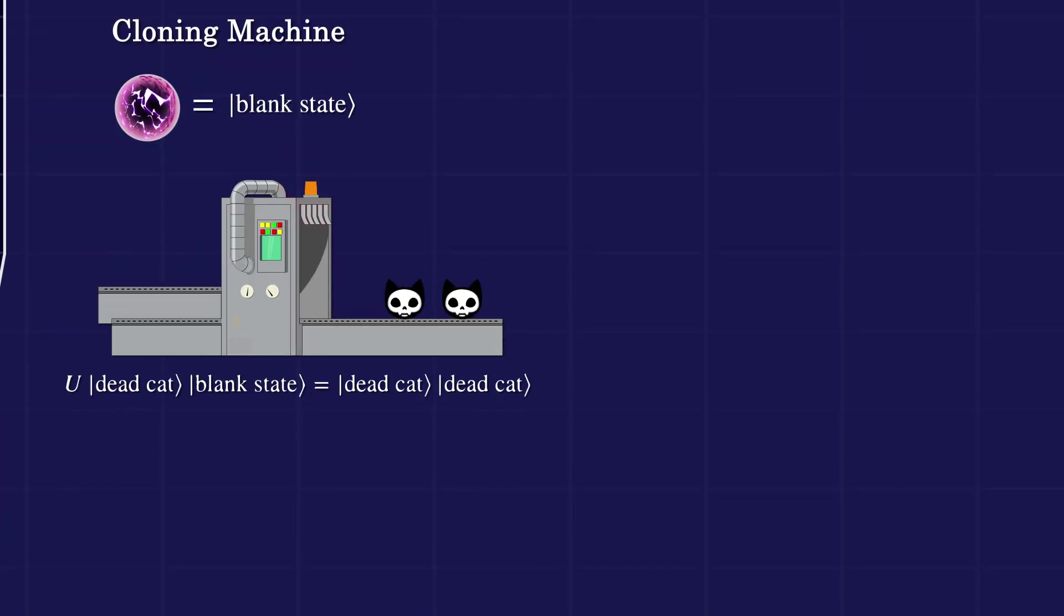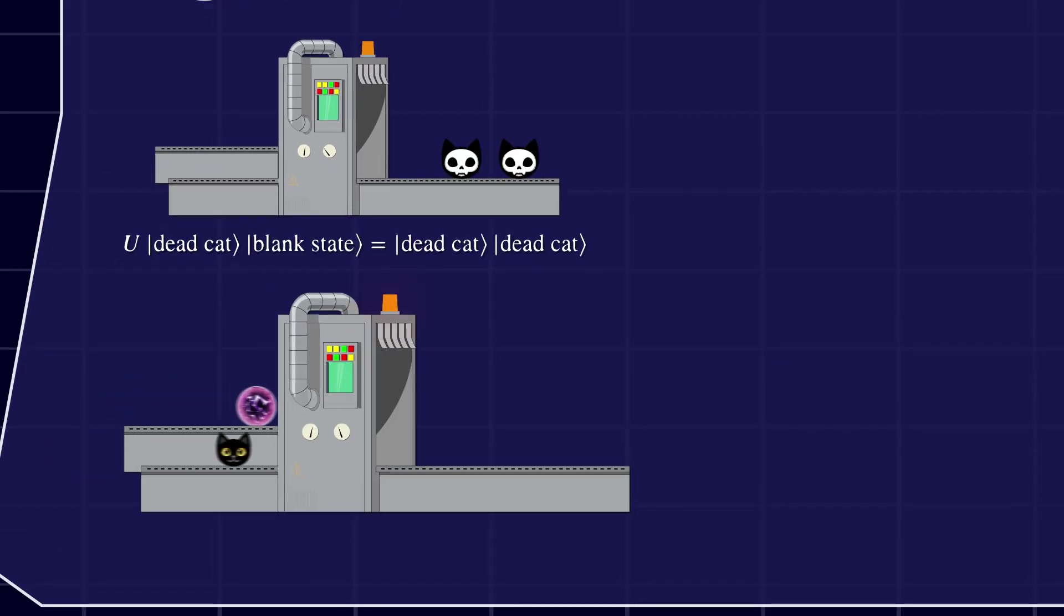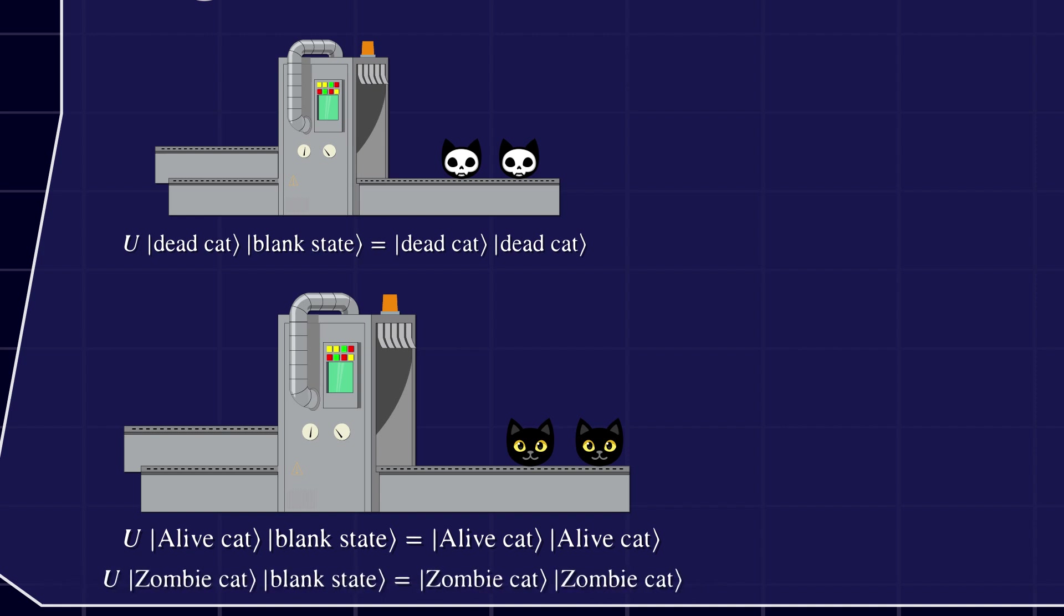If the cat is dead, we expect the output to be two dead cat states. And if the cat is alive, we expect two live cats. This is all nice. This machine can perfectly clone a dead cat and a live cat. But what happens if we feed a zombie cat into the cloning machine? We expect the cloning machine to satisfy something like this.